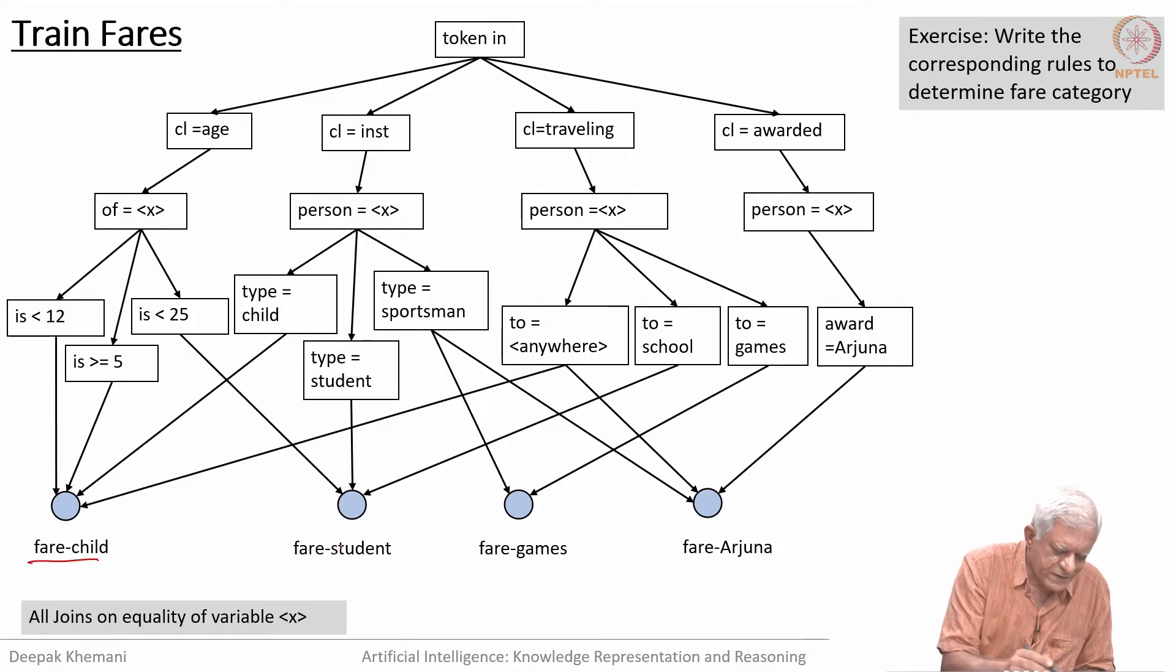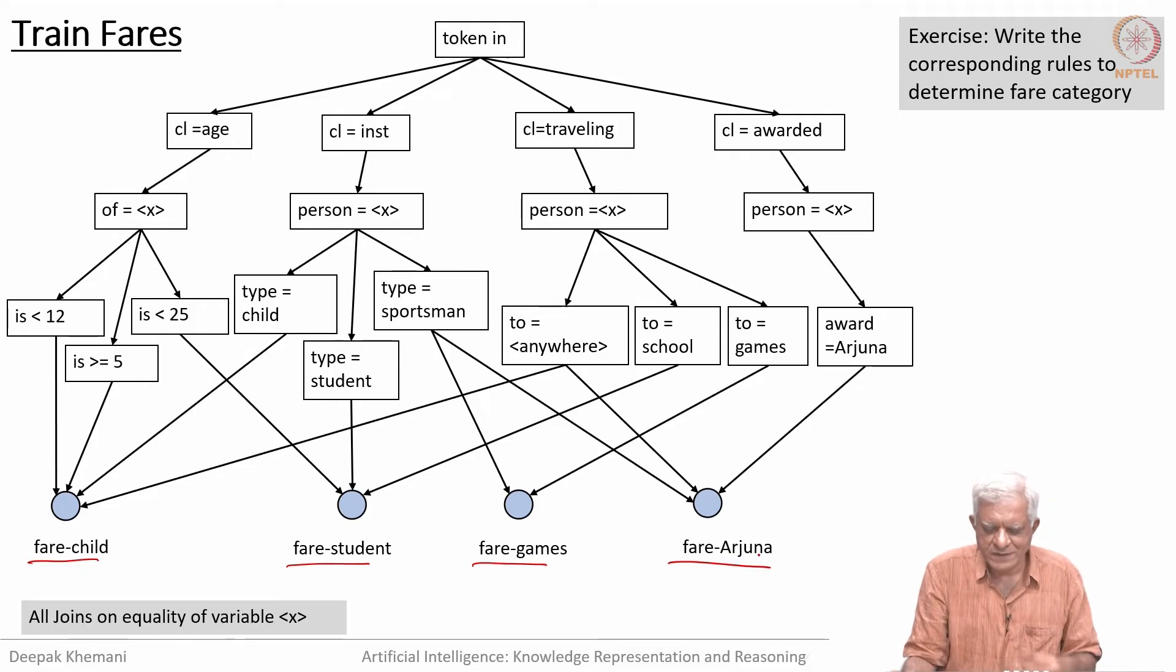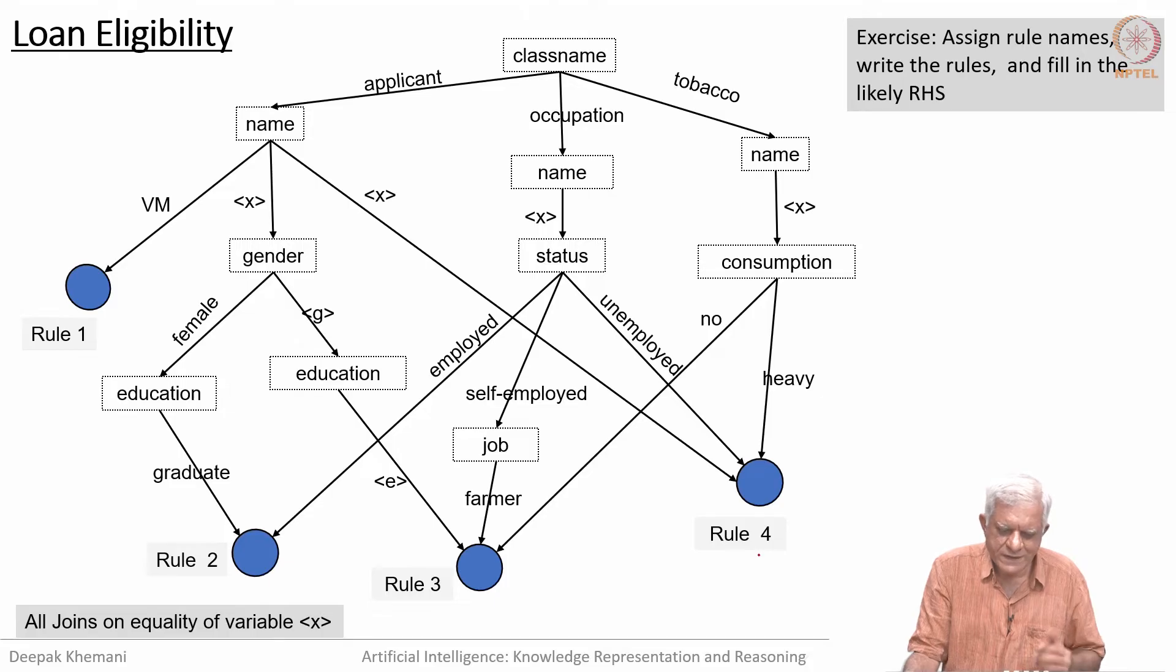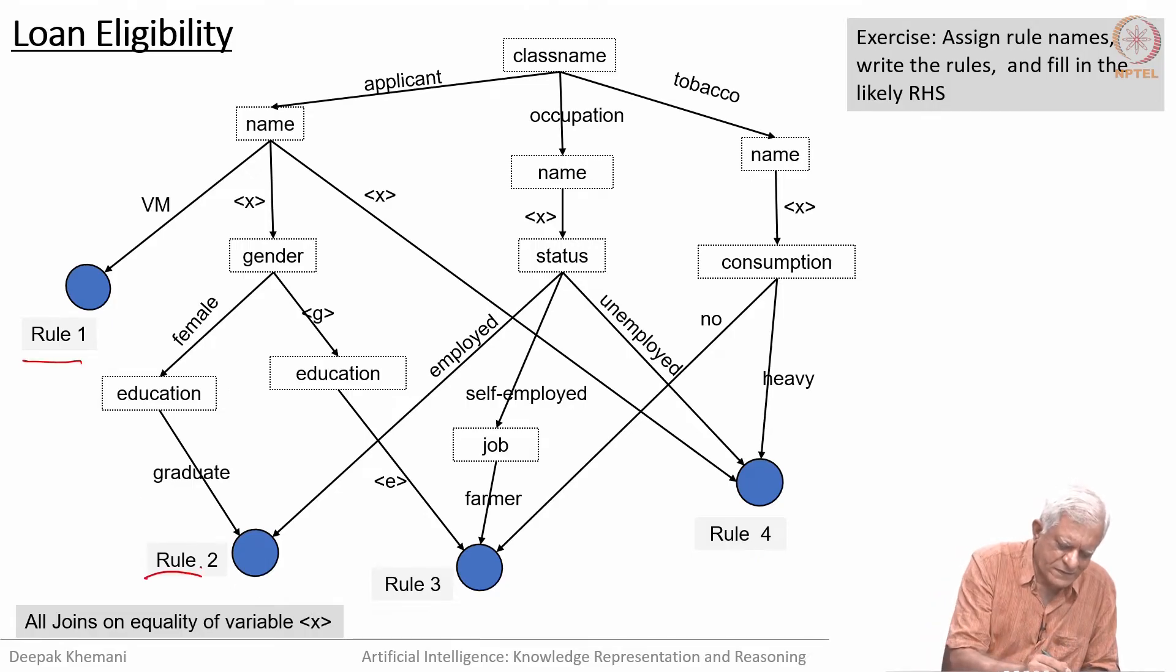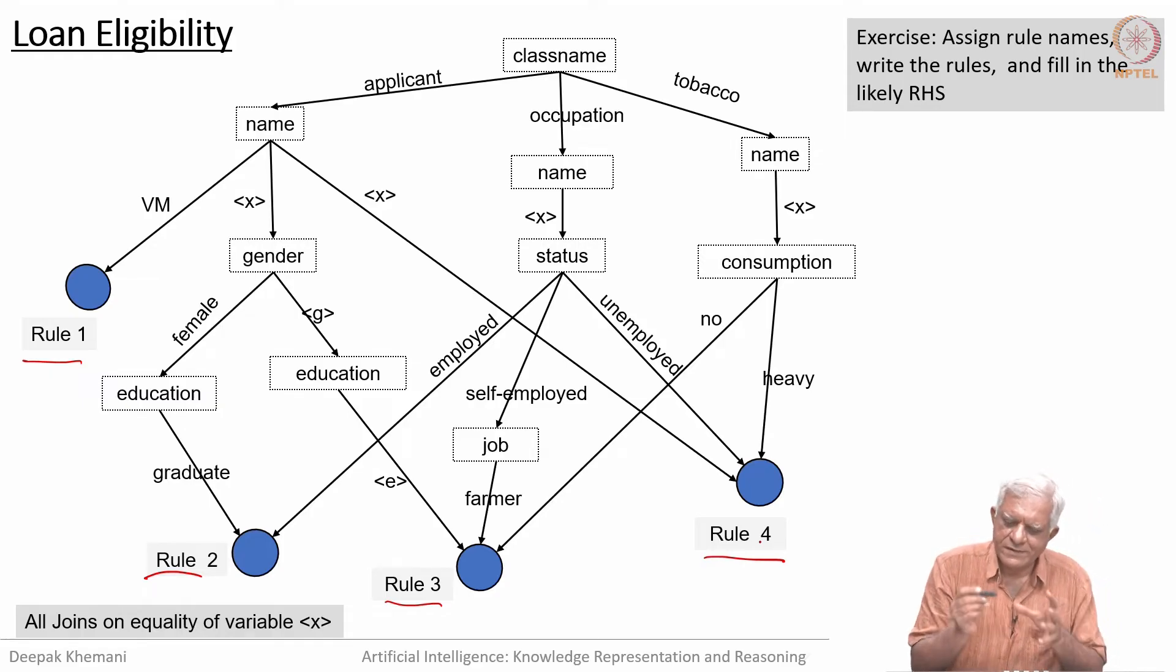What I would ask you to do is look at these networks and write the corresponding rules for the task they are doing. Give them appropriate names. We have given names here: fare child, fare student, fare games, fare Arjuna award winners—they are allowed free travel and stuff. Students, for example, get concession if they are going home; children have a lower fare. These rules were supposed to capture that. As an exercise, please write these rules in the OPS5-like language we have. All you have to do is look at this network and convert it into the four rules we have for four kinds of fares.